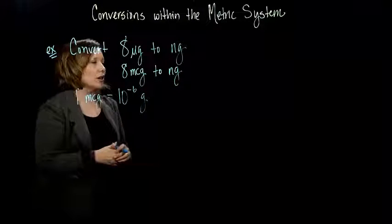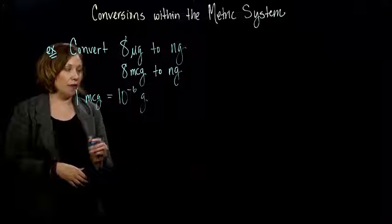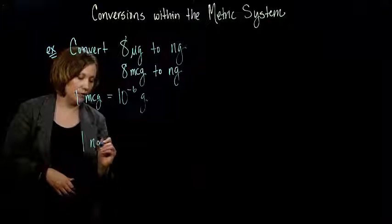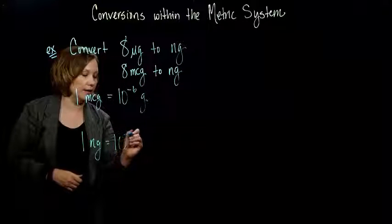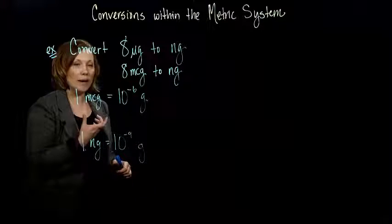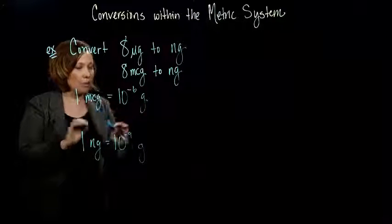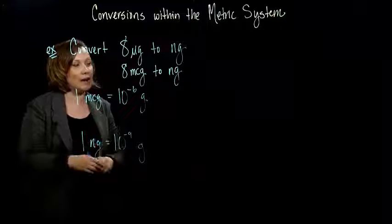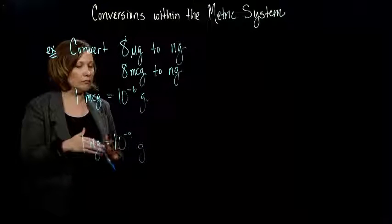And I also want to know about nanograms. If I look on the chart, one nanogram is equal to 10 to the negative 9 grams. The nice thing about having a basic unit of measure, we can measure both of these micrograms and nanograms in terms of grams.